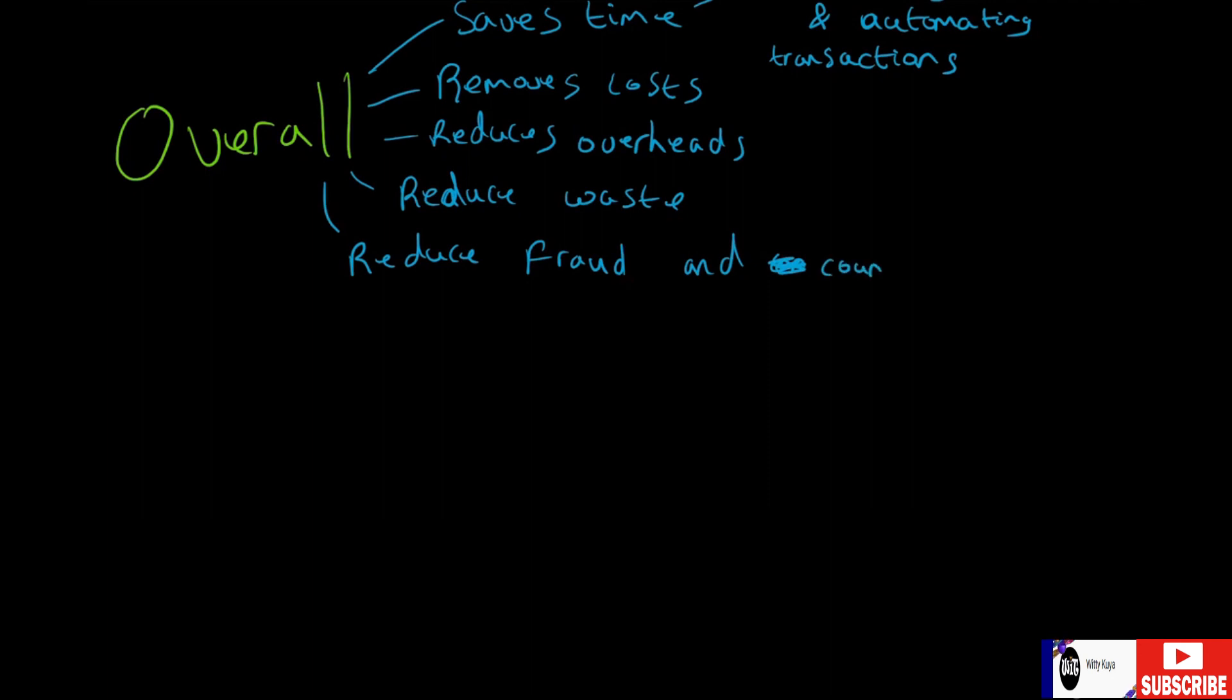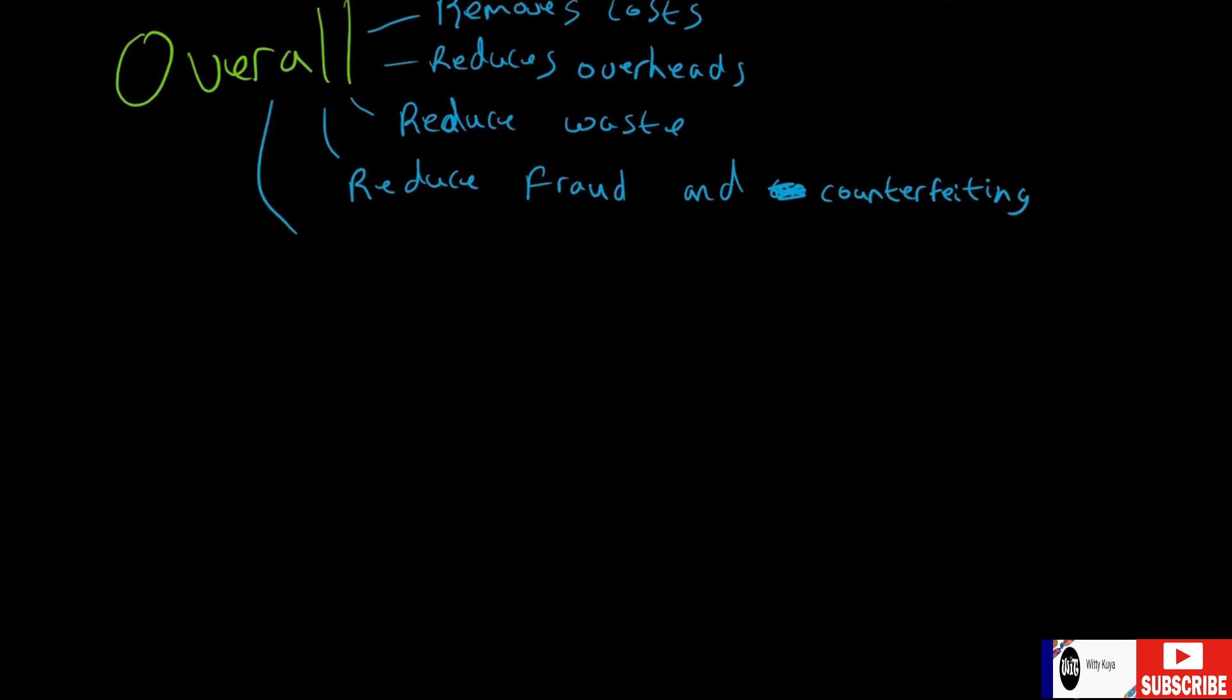And counterfeiting. All of this leads to increased trust between parties—whether that's us as a consumer and, say, Walmart or Amazon, the retailer and the manufacturers, the manufacturers and the suppliers. We can see where it's been, how it's been handled, who's handled it. So it increases trust between all parties.